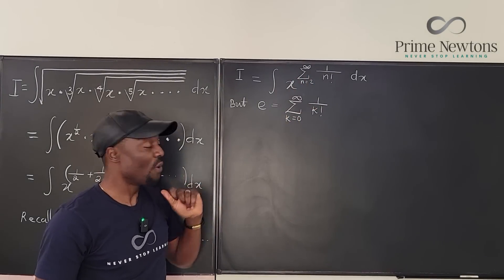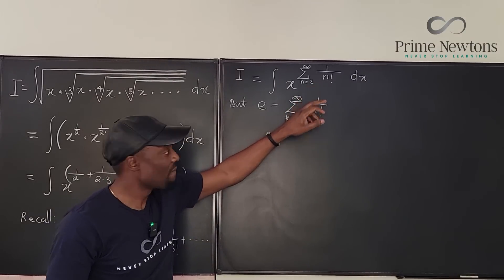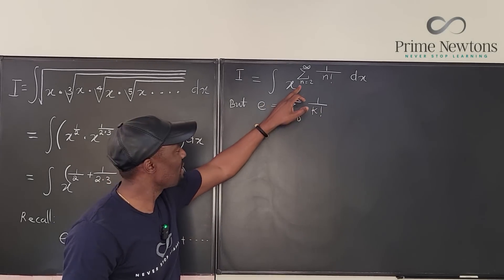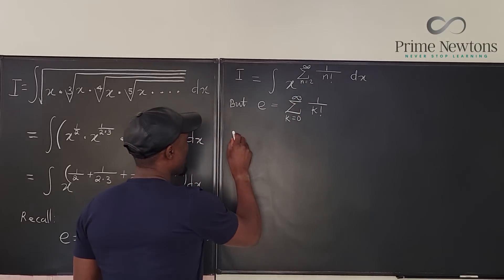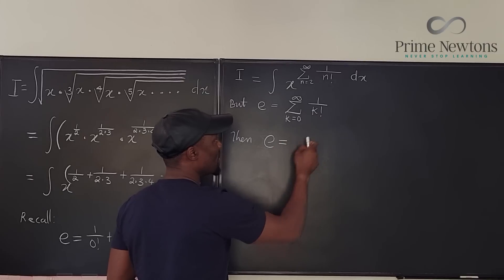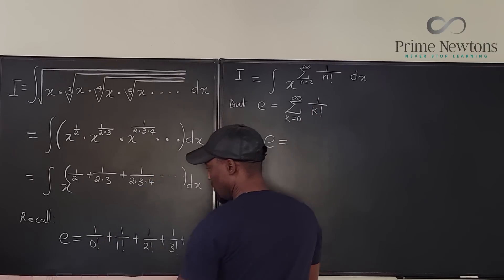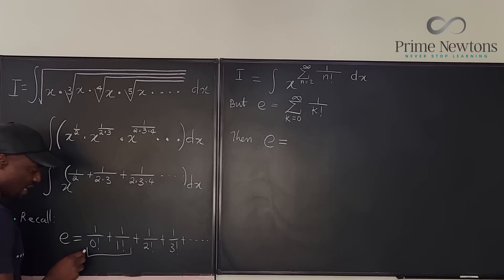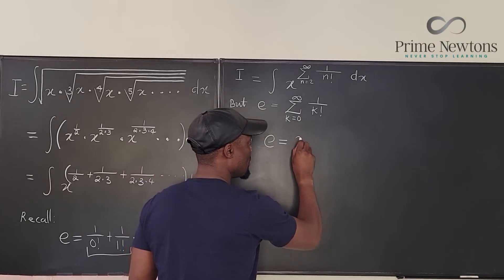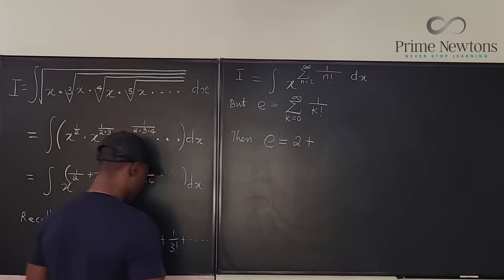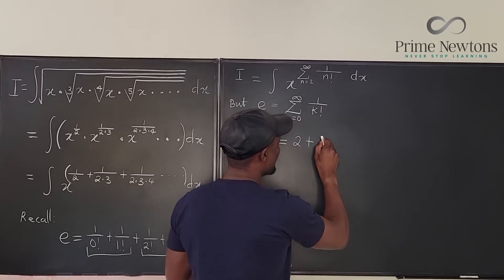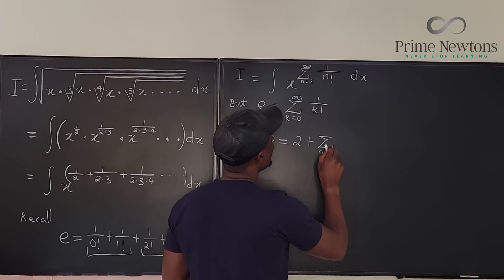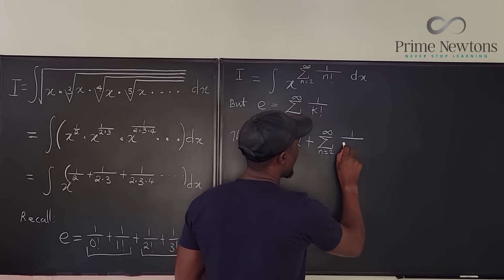What can I do to make these look the same? We can shift the beginning. If I shift from n equals 2, I handle the first two parts separately: 1/0! + 1/1! = 1 + 1 = 2. So e is going to be 2 plus the rest of it — and the rest of it is our sum from n equals 2 to infinity of 1/n!.